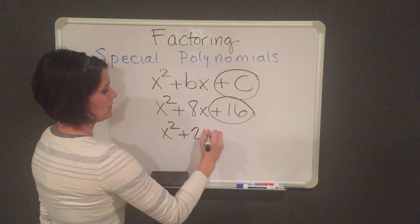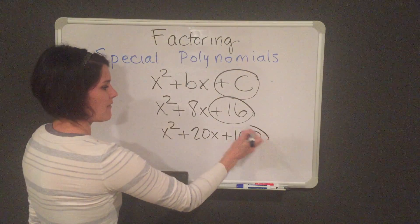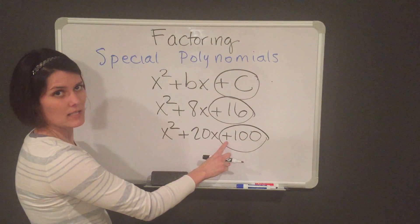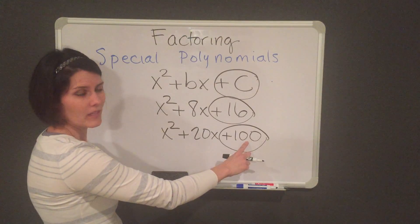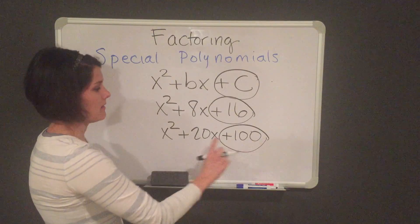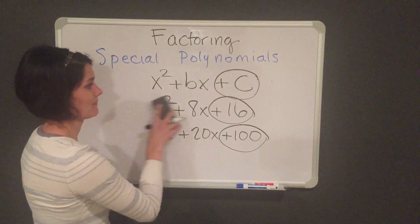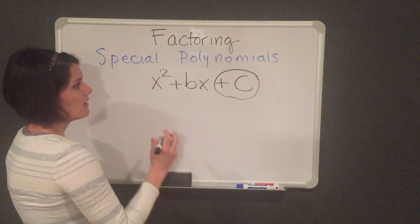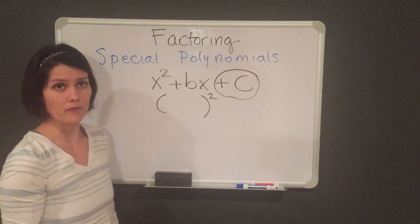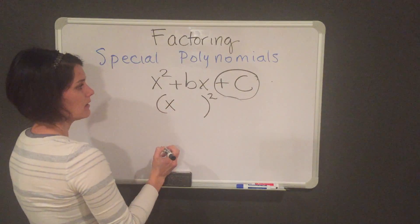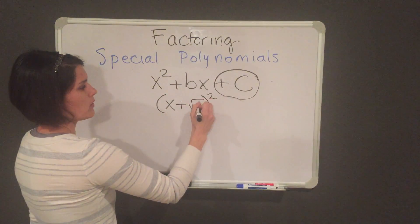Another example: if I look at my last term, it is positive and 100 is a perfect square. 10 times 10 gives you this number, and if I add 10 plus 10, I get my b term. So this would also be considered a perfect square trinomial. To factor these, you only need one parenthesis with a square on top because both factors are the same. You put an x in the front, copy the sign of the b term, and then take the square root of c.